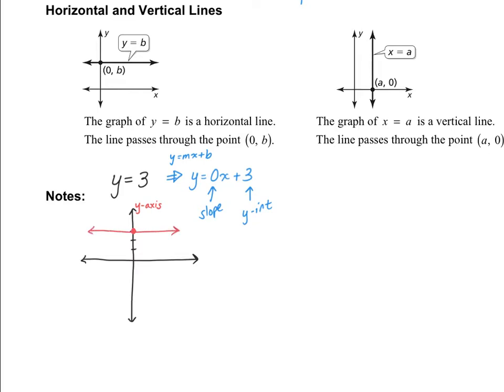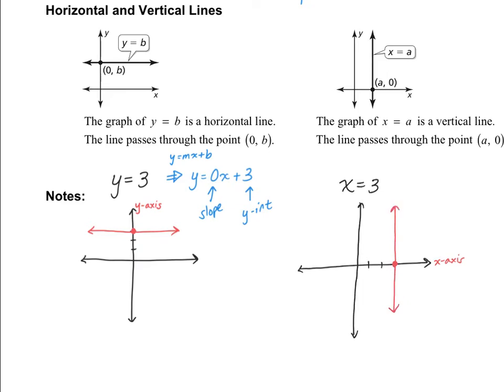For vertical lines, it's going to be X equals a number. The graph of X equals A is going to be a vertical line, and it's going to pass through the point (A, 0). For example, if I had X equals 3, it would cross the X-axis at 3, and it would be a vertical line going up and down.